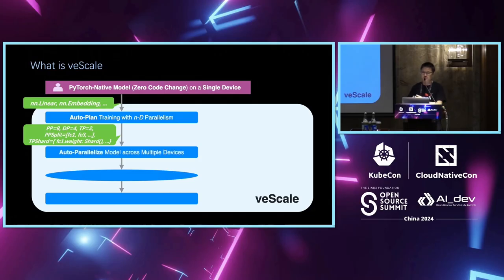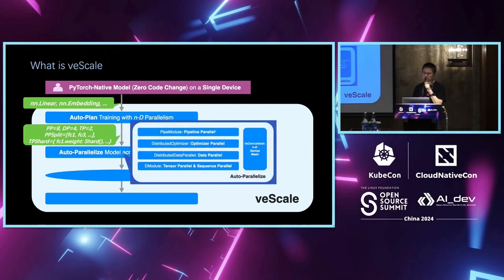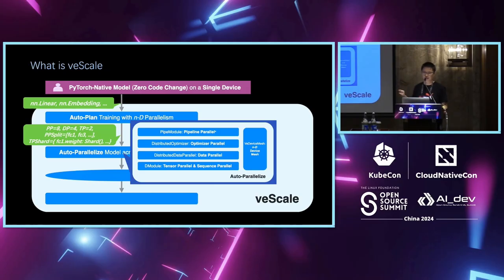With this plan, we provide a parallelized API that handles the deployment of distributed training. It is responsible for materializing your memory and inserting all the communication calls in the right places so that TP and PP work correctly. Within V-Scale, we have several wrappers — different wrappers are responsible for different parallel dimensions. For example, we have a PP pipe module for pipeline parallelism, DDP for data parallel, and a D module for TP. Users can call the parallelized API to use all three at the same time, or call each wrapper individually.